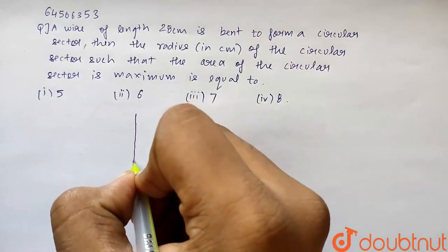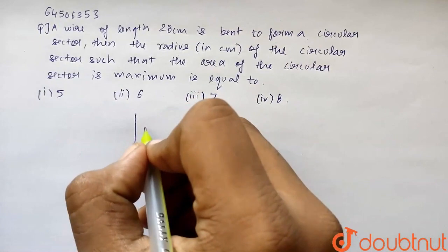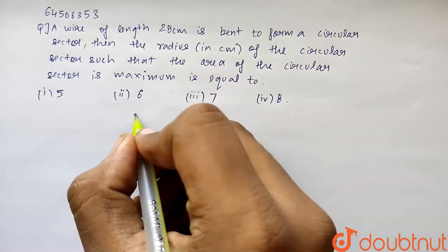So basically a wire of length 28 cm is given. The length of this wire is 28 cm. Okay, so let this be the wire.